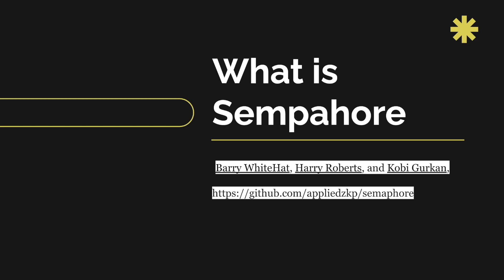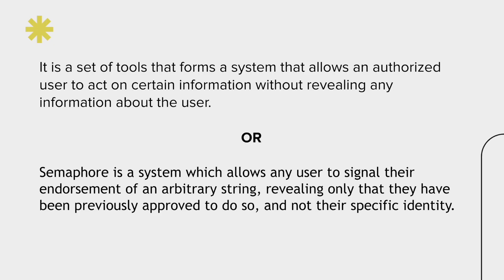Their core focus is to build zero knowledge proof based apps and utilities on top of Ethereum. First, a brief definition: semaphore is a set of tools that forms a system that allows an authorized user to act on certain information without revealing any information about the user. A user can convey some message over the internet or web3 without telling anything about who they are, where they come from, without revealing any passwords or identity.